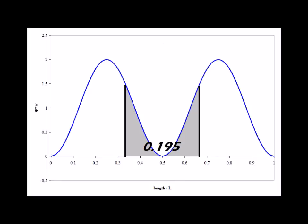This means it's much less likely to find the particle in the middle third of the box than either the case for n equals 1 or for a classical particle, where the probability would be exactly one-third.